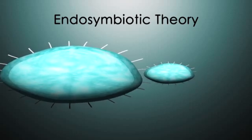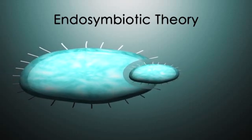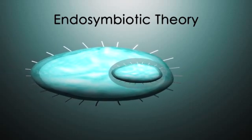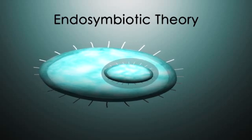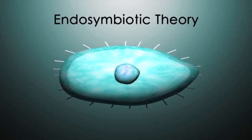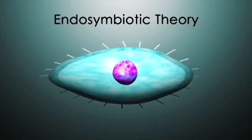Protists were probably the first eukaryotes, according to what's called endosymbiotic theory. The first protists formed when cells that did not have a nucleus engulfed smaller cells. Over many years, these smaller cells evolved into the larger cells' nucleus and other organelles.